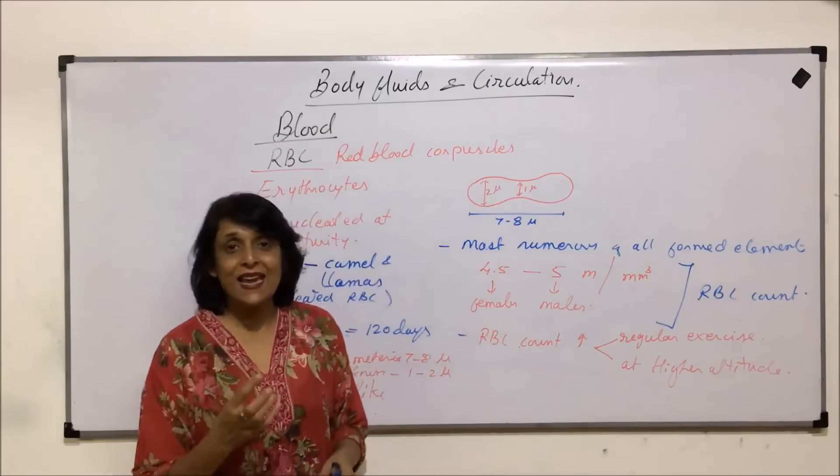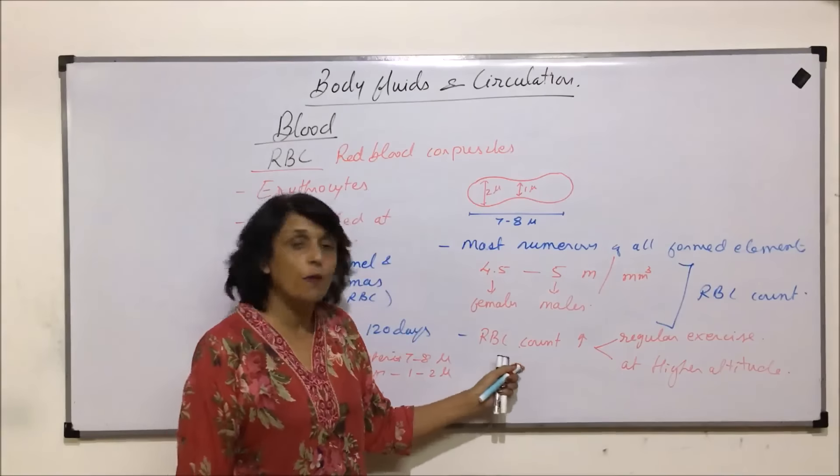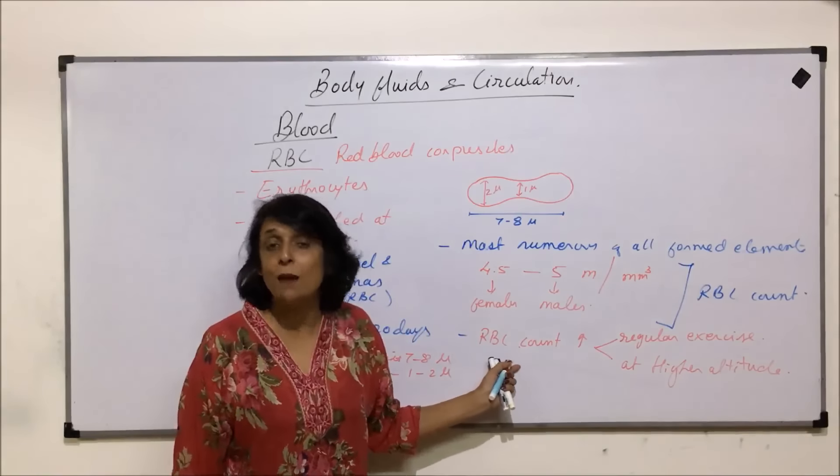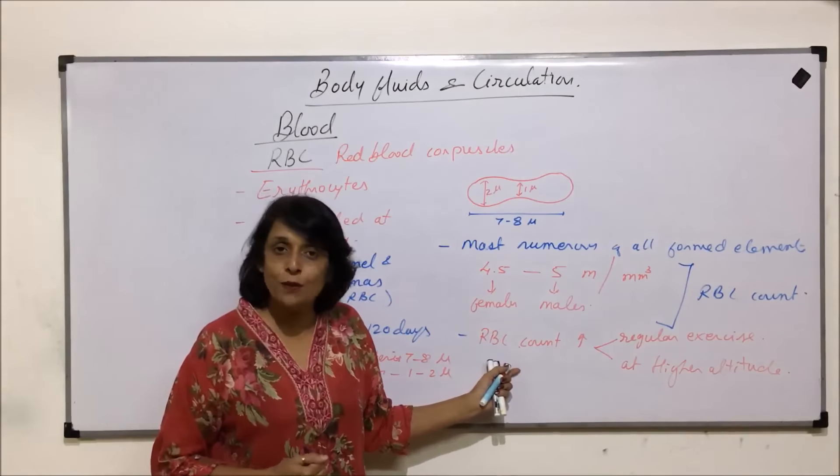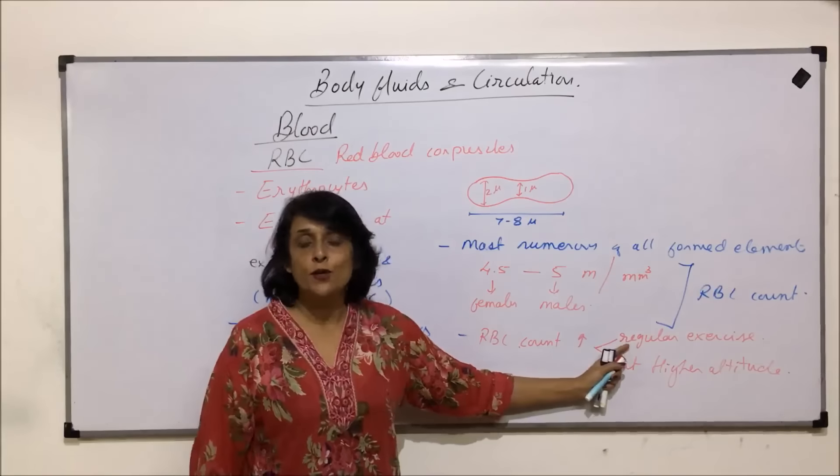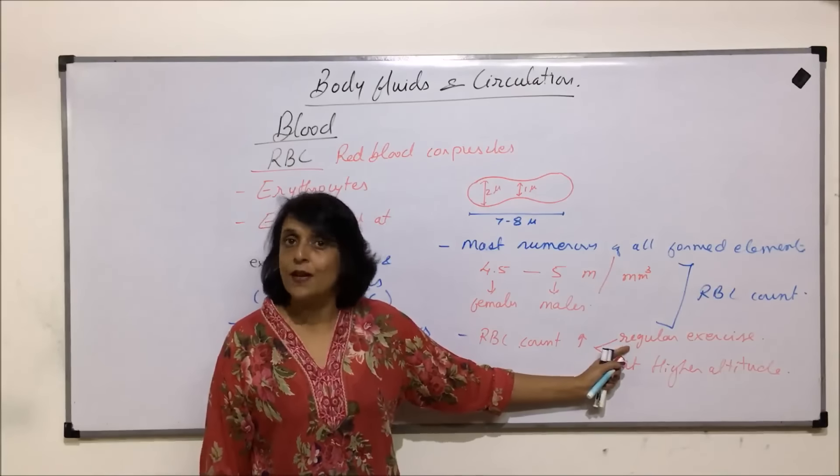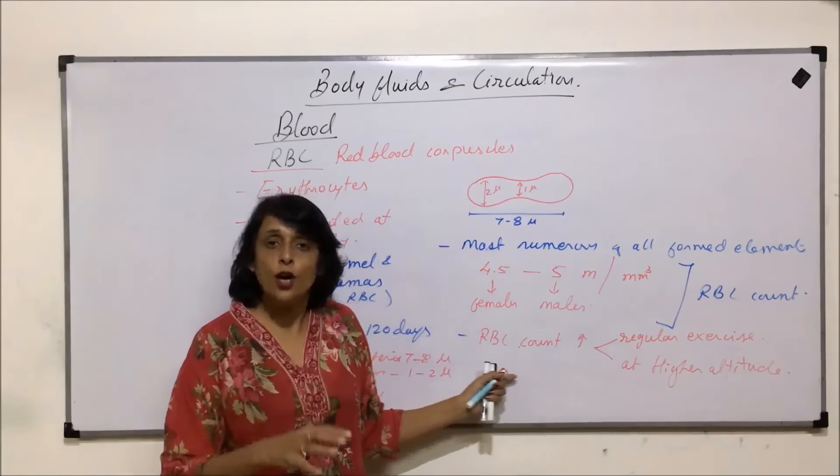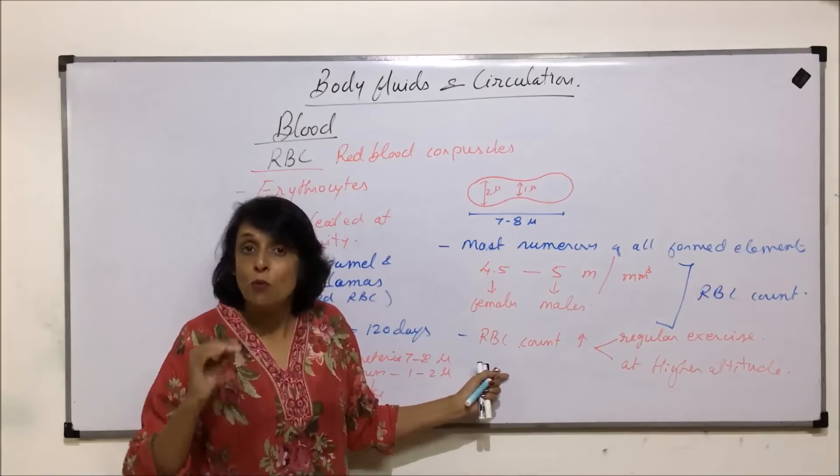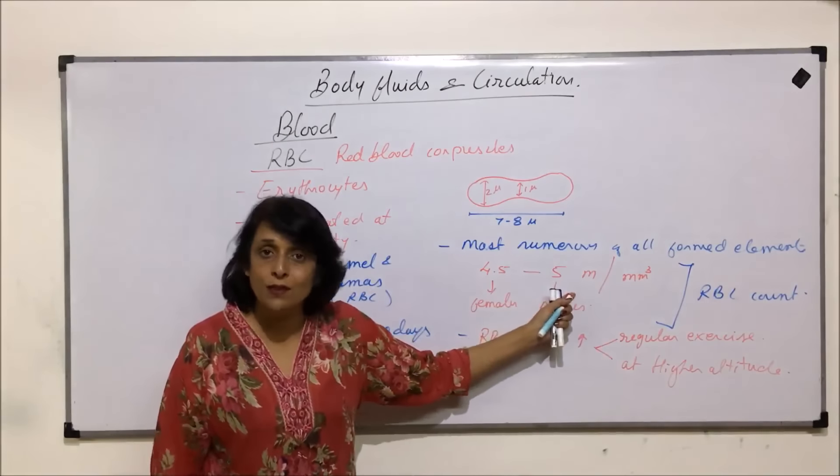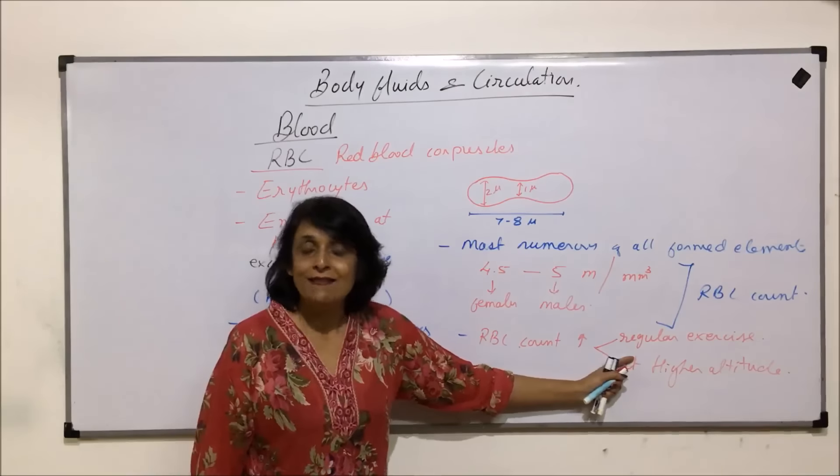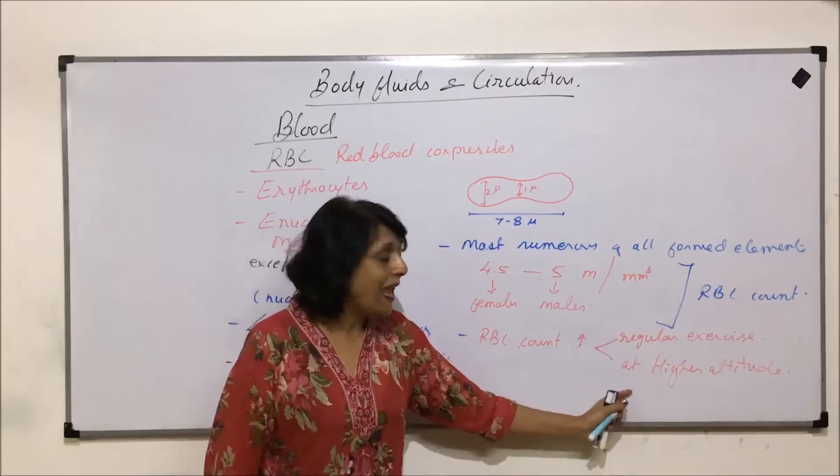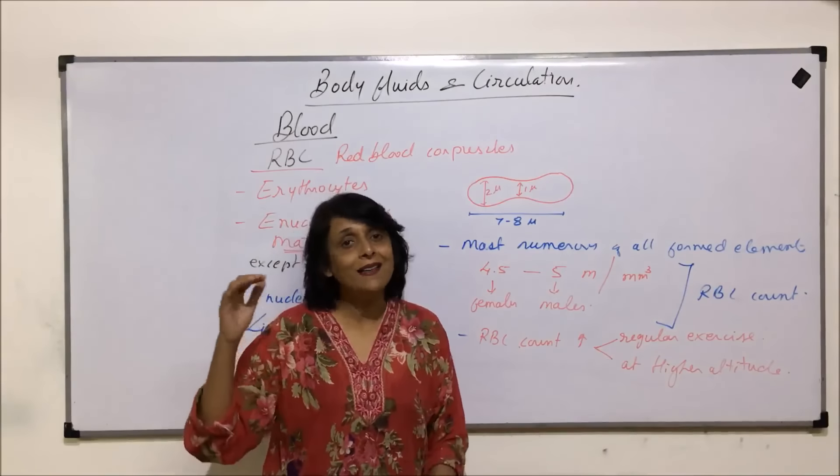To take more oxygen it would require more RBC number because it is hemoglobin which is going to bind with it. If a person is exercising on a regular basis, his or her RBC count is going to be more as compared to the normal to fulfill that oxygen demand.